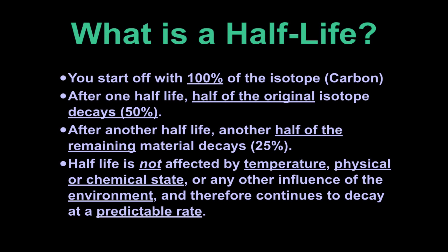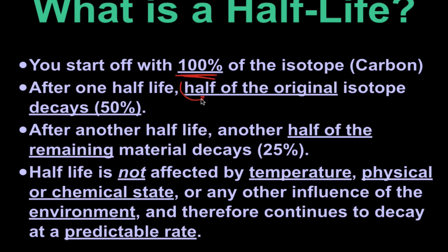So what is half-life? Basically you start off with 100 percent of something — for instance, we're dating some sort of fossil or bone. After one half-life, half of the original isotope decays. So you have 100 percent and it breaks down into 50 percent of the isotope, and then after another half-life it breaks down again.